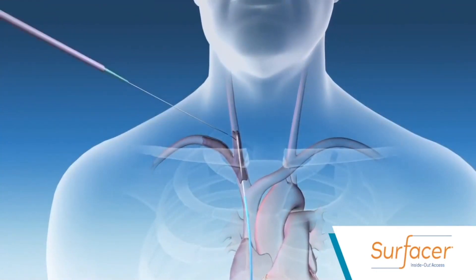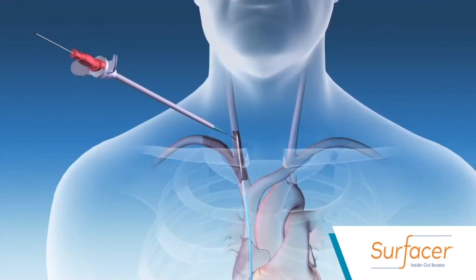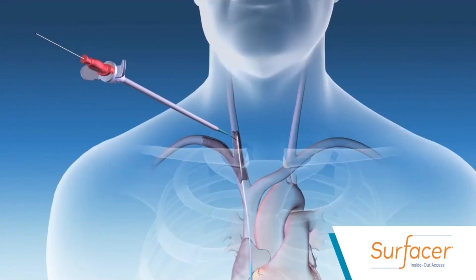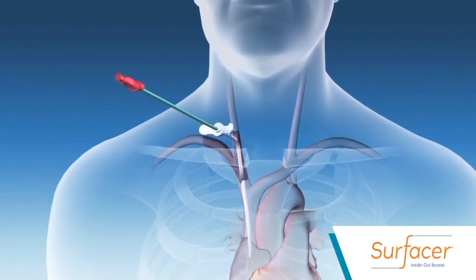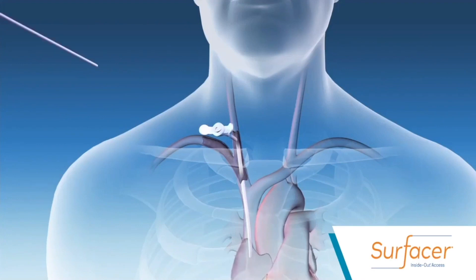The operator then inserts a sheath from the outside in. The Surfacer is removed and a central venous catheter or dialysis catheter is placed using standard access procedures.